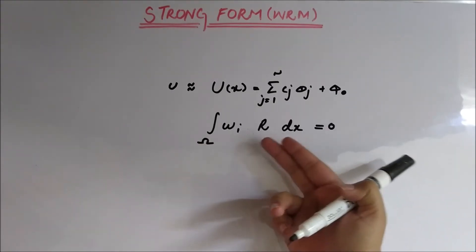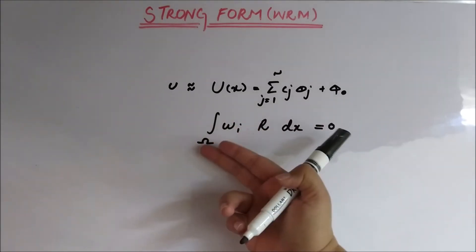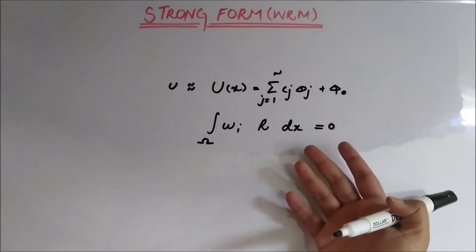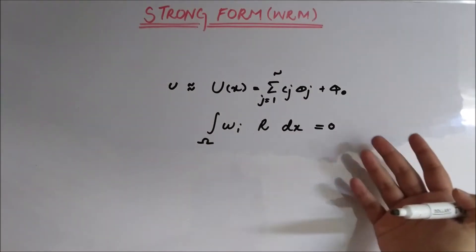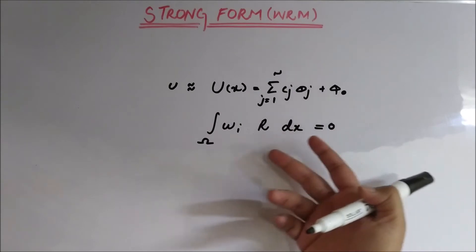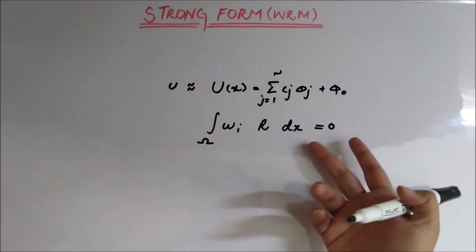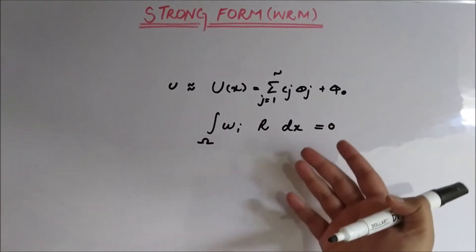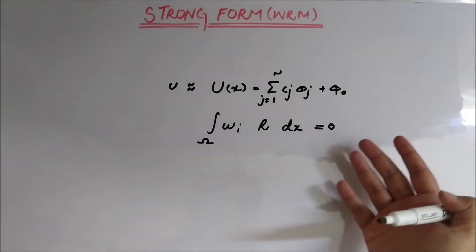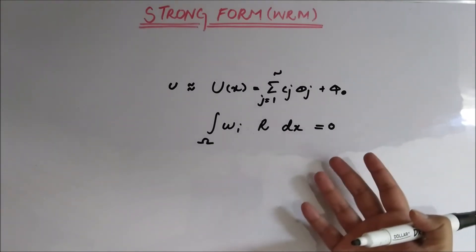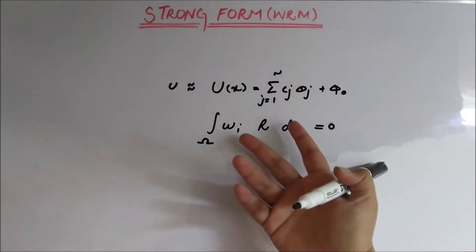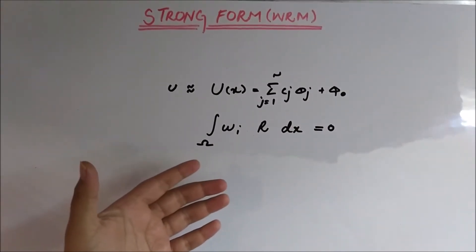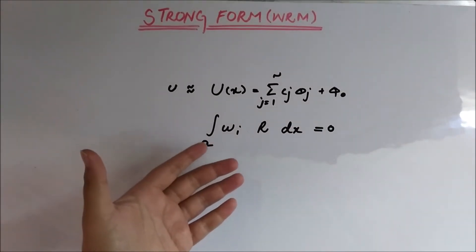Given the weighted residual integral of the weight function over the whole domain, where r is the function of the positional parameter as we have seen in previous videos, that integral is equal to zero because we have to minimize the residual, minimize the error, and make the best approximation. From here, the main condition on the weight function is to be linearly independent.